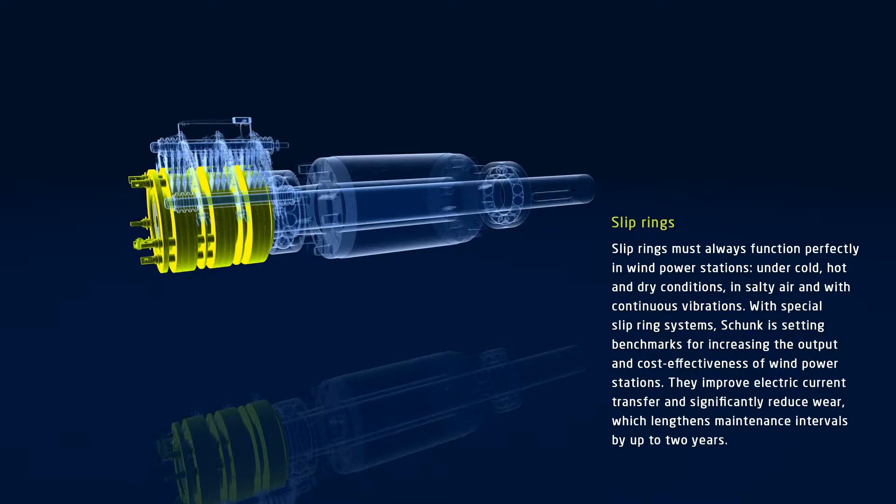High quality slip ring systems by Schunk are an important contribution here in that they significantly improve electric current transfer. In addition, they reduce wear, so that maintenance intervals can be lengthened to up to two years.